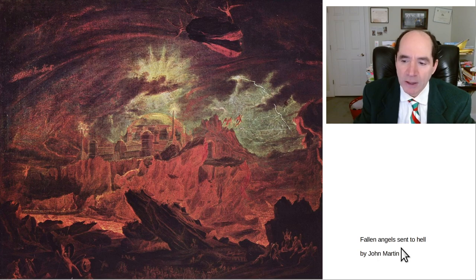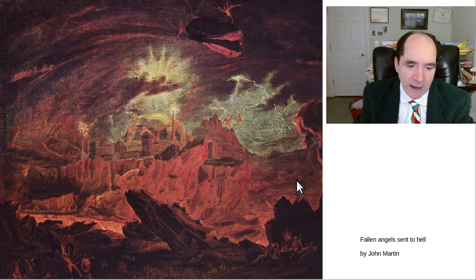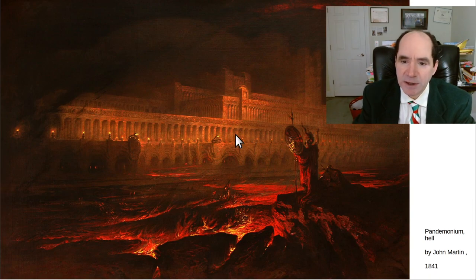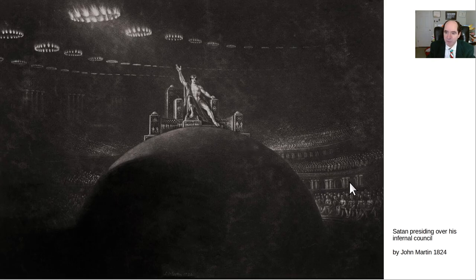This painting is called Fallen Angels Sent to Hell by John Martin, an English painter. The point is this is like the story of Paradise Lost — Satan had a falling out with God and was sent down into hell. Paradise Lost describes all this in very entertaining detail. Here's another painting by John Martin called Pandemonium — 'pan' meaning all and 'demons,' of course — Satan's reign in hell. And here is Satan presiding over the Infernal Council.